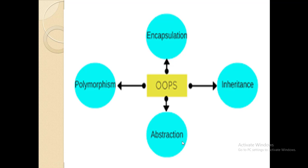Another main concept in OOP is abstraction. Abstraction is the process of providing only the essential details to the outside world and hiding the internal details — representing only the essential information in the program. In abstraction, we show only relevant details to the users and hide irrelevant details.